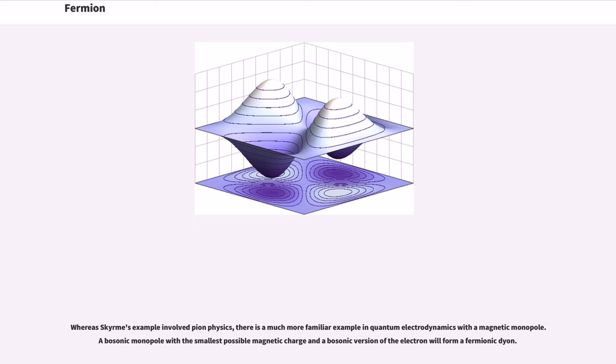Whereas Skyrme's example involved pion physics, there is a much more familiar example in quantum electrodynamics with a magnetic monopole. A bosonic monopole with the smallest possible magnetic charge in a bosonic version of the electron will form a fermionic dion.